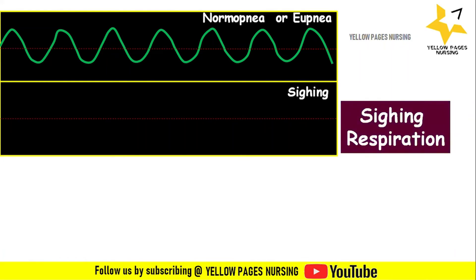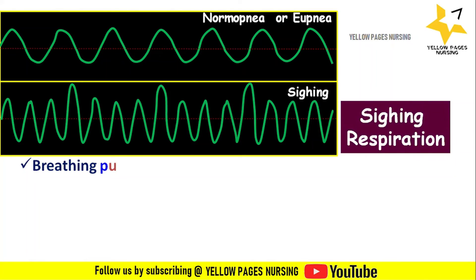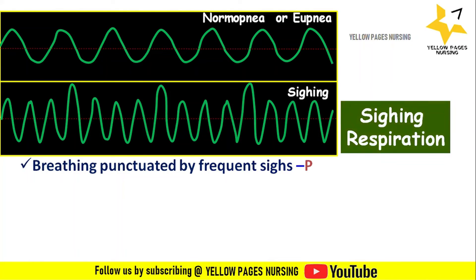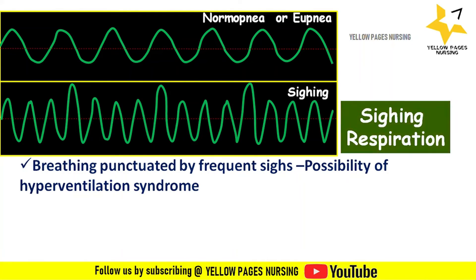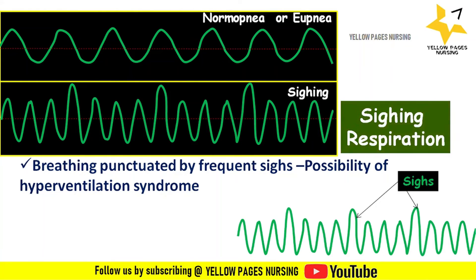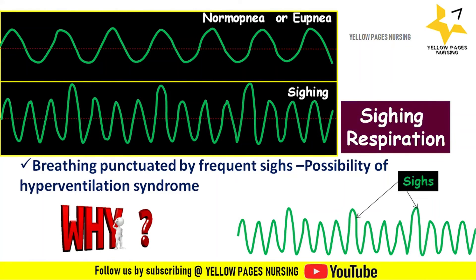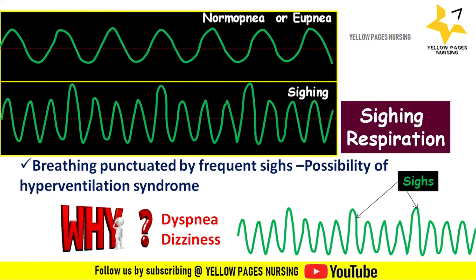Next comes sighing respiration. Sighing respiration is breathing punctuated by frequent sighs, which should alert to the possibility of hyperventilation syndrome — a common cause of dyspnea and dizziness. Occasional sighs are normal.